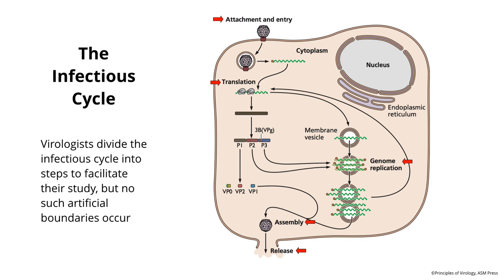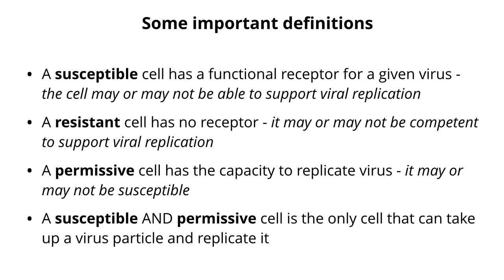Now, this is an artificial division. We divide the infected cell into steps so that it's easier for us to study it. Of course, there are no such divisions in a real infected cell — we just do it to make it easier to study. At the beginning, we need to set forth some definitions. These are words you'll hear me use that you may not have heard before.